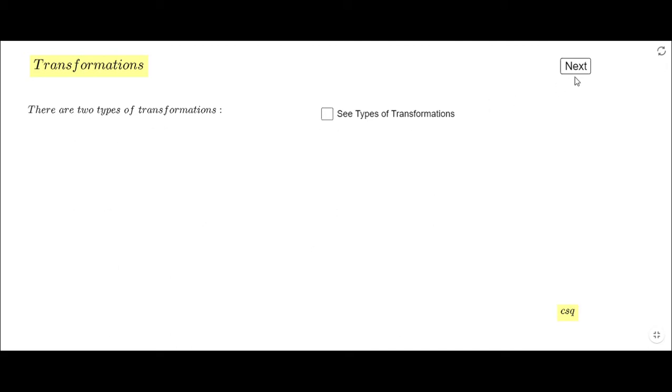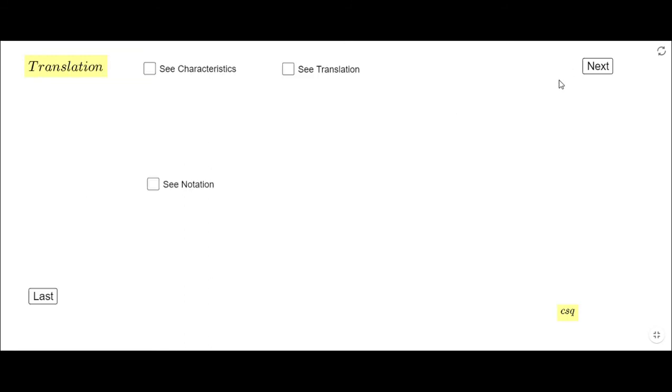Now you see here translation. If you remember, this is the first rigid transformation or rigid motion, another name you can hear, or congruent transformation. I want you first to see how it looks like. You see this is the pre-image and based on this vector we have the image. This is a translation.